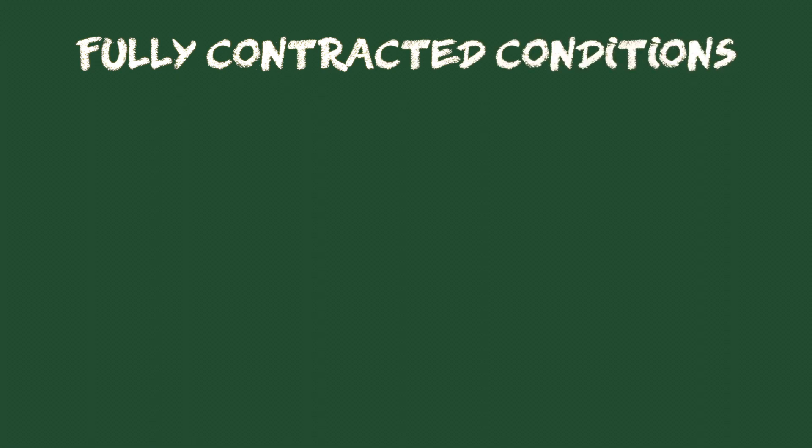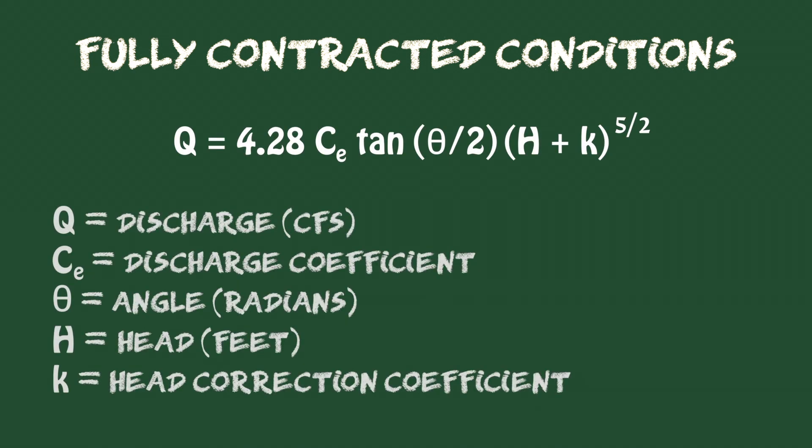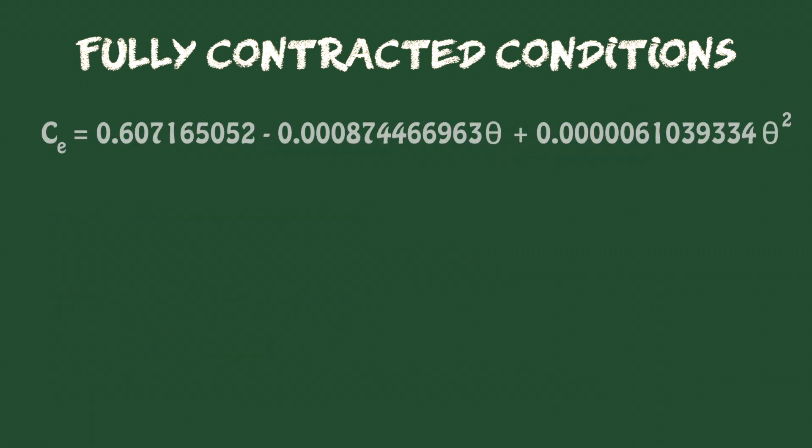The discharge through the V-notch weir is calculated using the discharge coefficient, C sub e, which is a function of the angle theta of the weir. In this case, for theta equals 90 degrees, the discharge coefficient C sub e is 0.578.